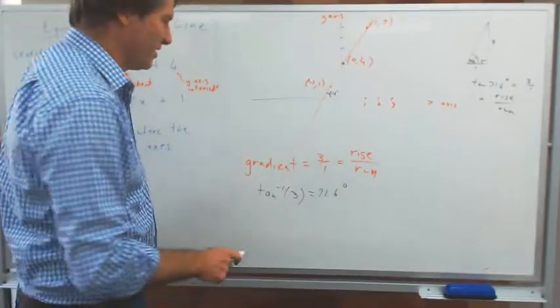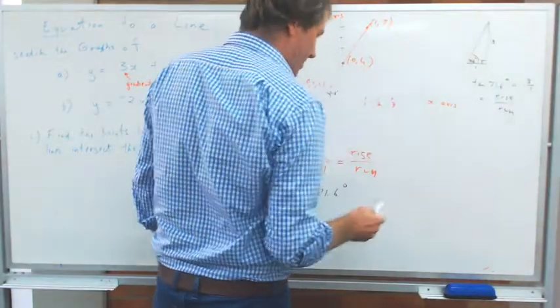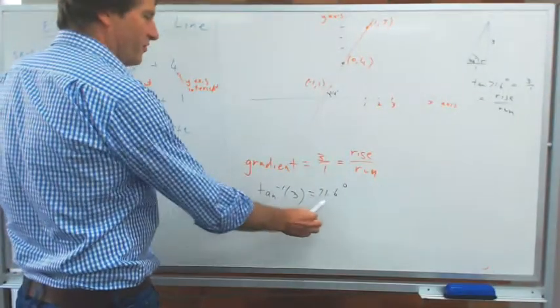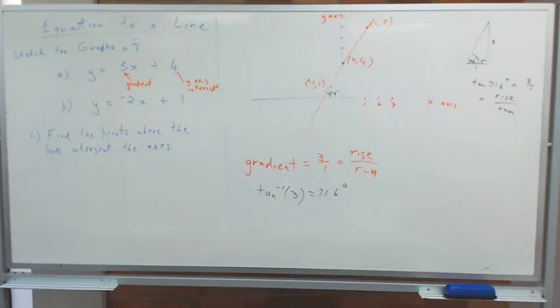So there's two ways of writing that. You can either say tan 71 degrees equals 3, or you can say inverse tan of 3 equals 71 degrees. They mean the same thing.